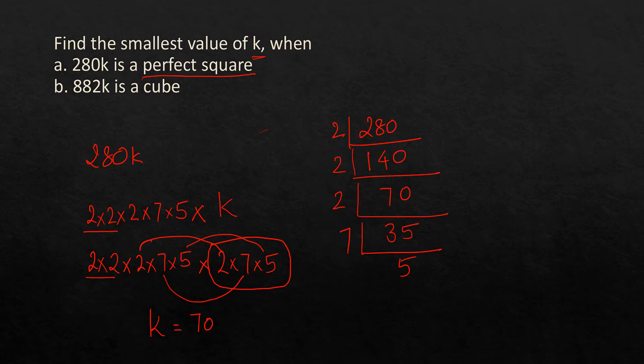The second part asks: find the smallest k such that 882k is a perfect cube. Let's do prime factorization of 882. Dividing: 882 ÷ 2 = 441, and 441 is not divisible by 2, so we try 3.